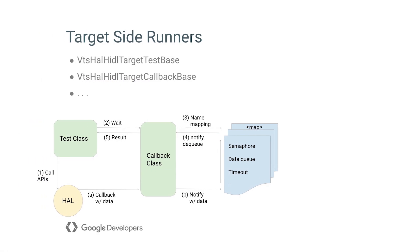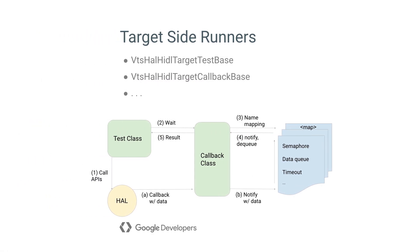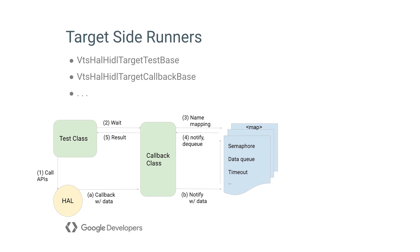Besides host-side templates, VTS also offers target-side runners such as HidlTestBase class and CallbackBase class. HAL HIDL tests in VTS should inherit from VtsHidlTargetTestBase, and callback classes are encouraged to inherit from VtsHidlTargetCallbackBase, which offers utility functions such as WaitForCallback and NotifyFromCallback.